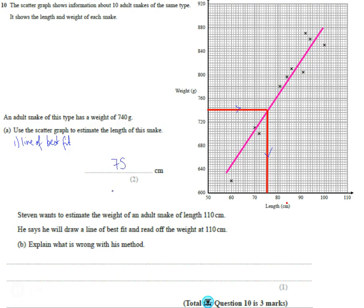Now it says Steven wants to estimate the weight of an adult snake at length 110 centimeters. So 110 is here. He says he'll draw the line of best fit and read off the weight at 110 centimeters.